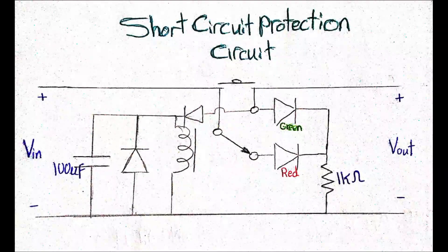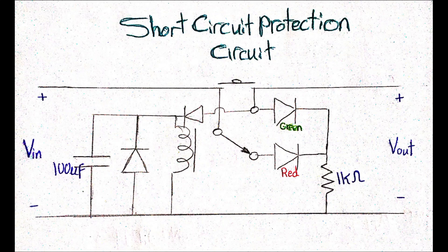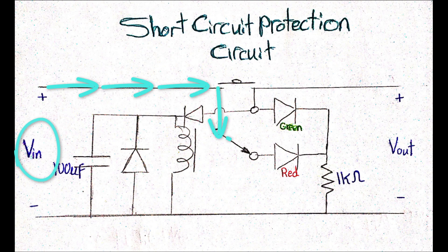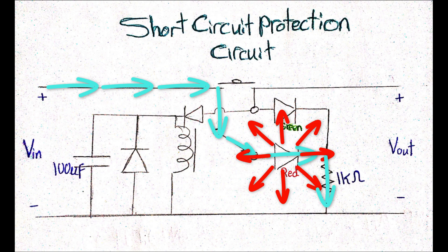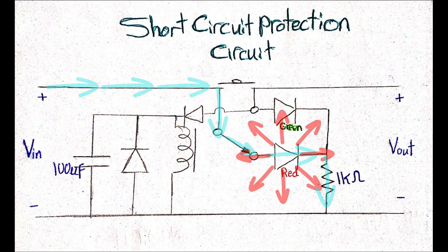As a warm up, let's start with the relay based short circuit protection circuitry. From the circuit diagram shown, as long as there is potential difference supplied at the input terminal, the red LED that's connected to the normally closed terminal of the relay will be turned on, indicating that the output is disconnected.